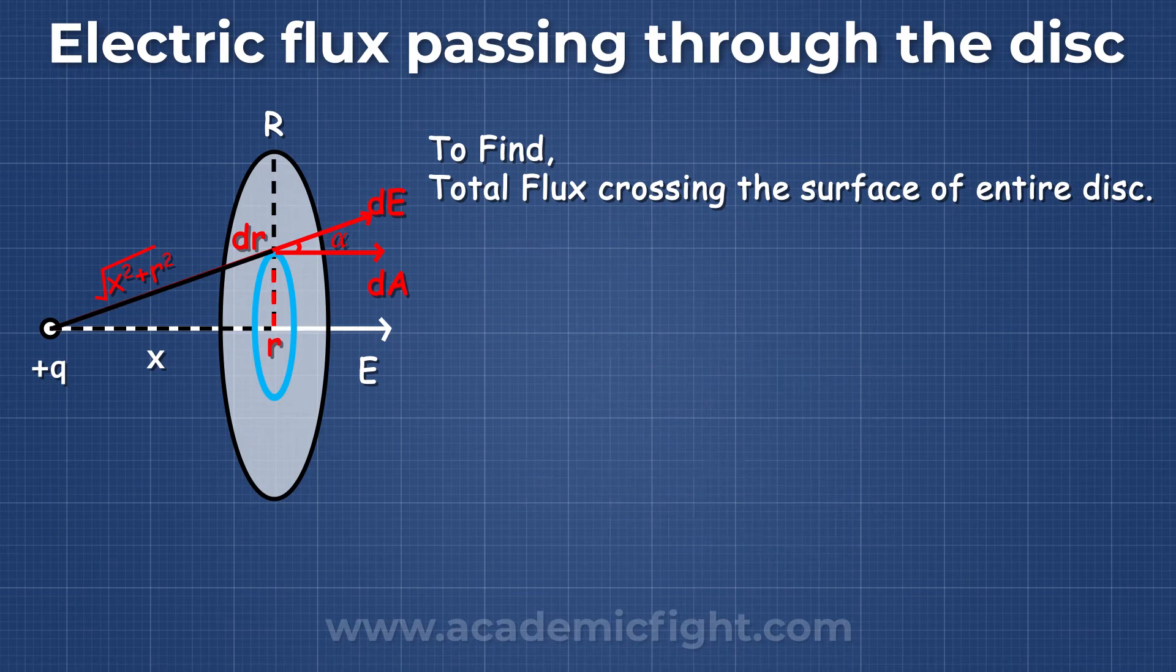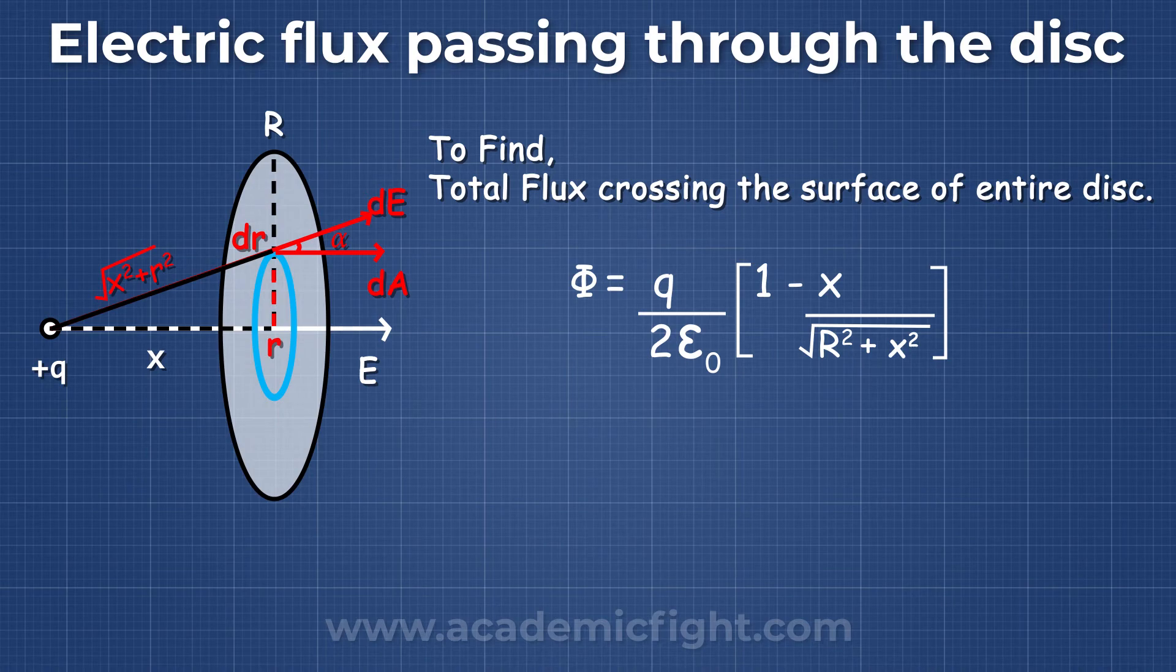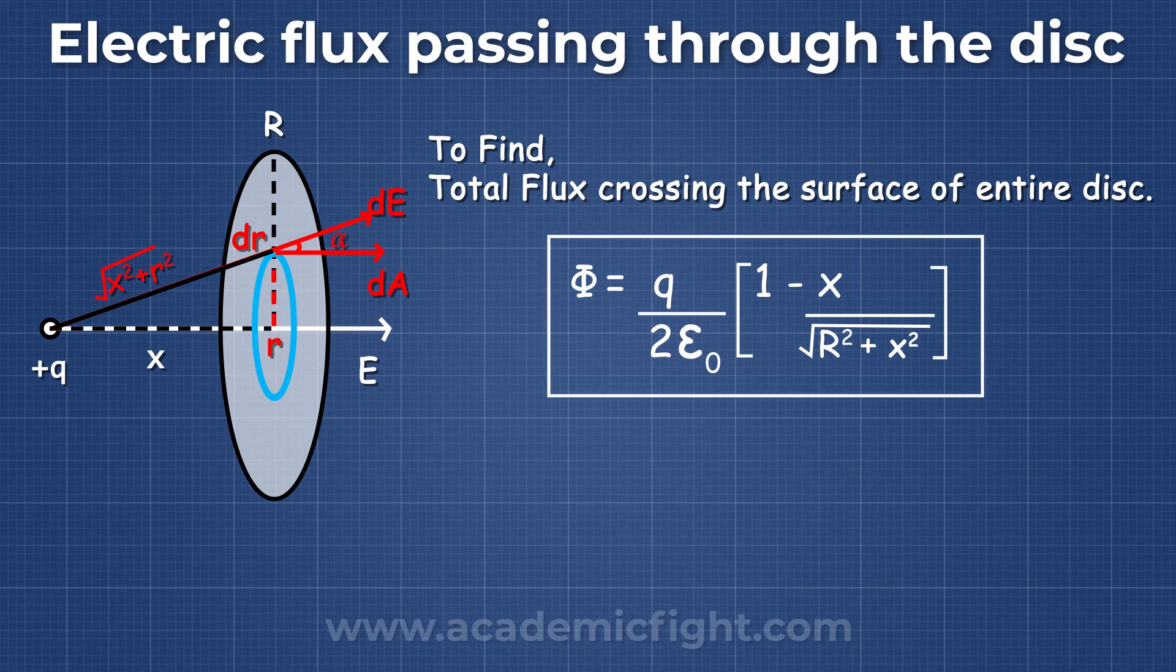On solving the integration, we get φ = q/(2ε₀) × [1 - x/√(R² + x²)]. This is the final formula for electric flux passing through the disk because of the charge.